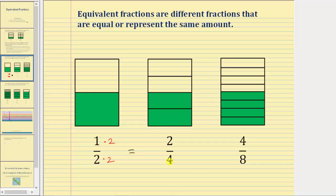To go from two-fourths to four-eighths, notice how we would need to multiply the numerator and denominator by a whole number. We're representing the amount using smaller pieces.